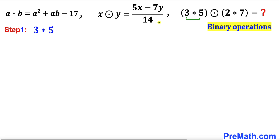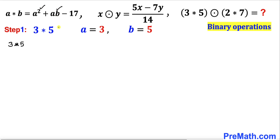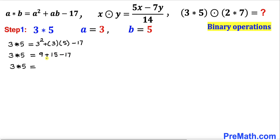Let's take care of 3★5. Our a value is 3 and b value is 5. Plugging into the formula gives us 3² + 3×5 − 17, which simplifies to 9 + 15 − 17.